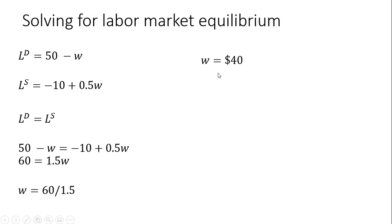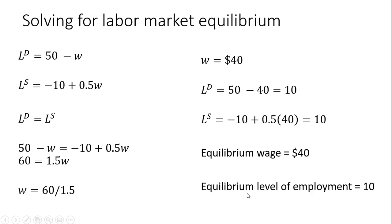To get the equilibrium level of employment, plug $40 back into either the demand or supply equation. At a wage of $40, firms will want to hire 10 workers. 50 minus 40 is 10. And at $40, the number of people willing to work is 10. Looking at the labor supply equation and plugging 40 into it, we get minus 10 plus 20. So equilibrium wage of 40, equilibrium level of employment equals 10.